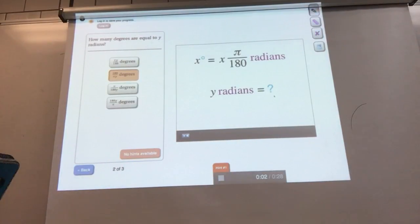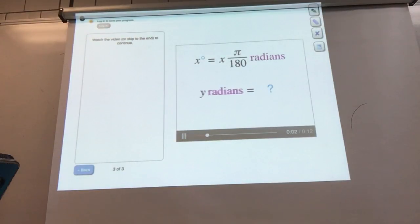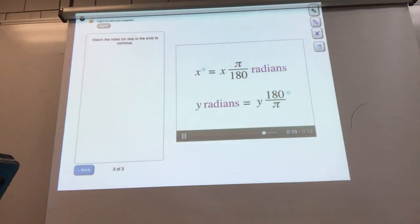We're going to do this by multiplying by 1 again. Starting with y radians, we multiply by 180 degrees in the numerator and pi radians in the denominator. The radians cancel out, and you end up with y times 180 over pi degrees. To convert from radians to degrees, multiply by 180 over pi.